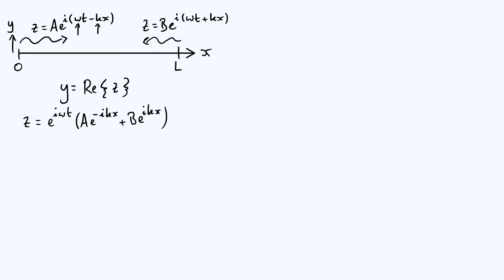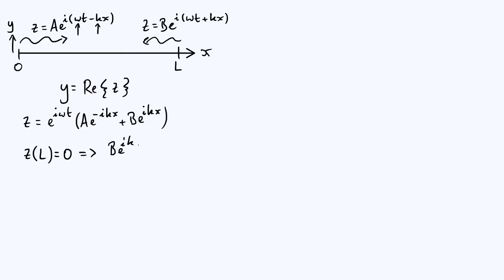We can use boundary conditions to establish the relationship between a and b. Since l is a fixed end — the string is clamped there — the displacement and therefore the complex displacement z at x equals l must always be zero. Setting z at x equals l to zero, and noting that e to the i omega t is never zero so we can divide through by it, the bracketed term must be zero. This gives b·e to the ikl equals minus a·e to the minus ikl, so dividing through by e to the ikl gives b equals minus a·e to the minus 2ikl.